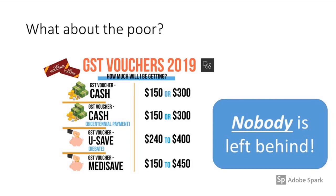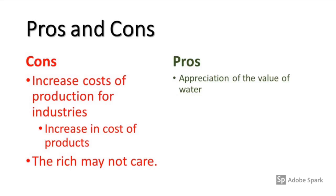For the needy and poor, the government provides assistance through GST vouchers under the U-Save scheme, which helps offset water and power costs. So nobody is left behind in Singapore. Through various subsidies, the government ensures a basic standard of living. Using water pricing is still a sound strategy — it allows everyone to realize that water is precious and cannot be wasted.